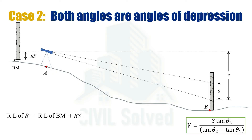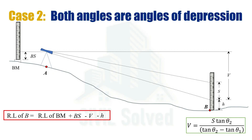Moving down by a magnitude of V — that is, subtracting V — we get the reduced level at the point where the staff reading is taken at theta 2. Then subtracting that staff reading H, we get the final equation for the reduced level of point B.